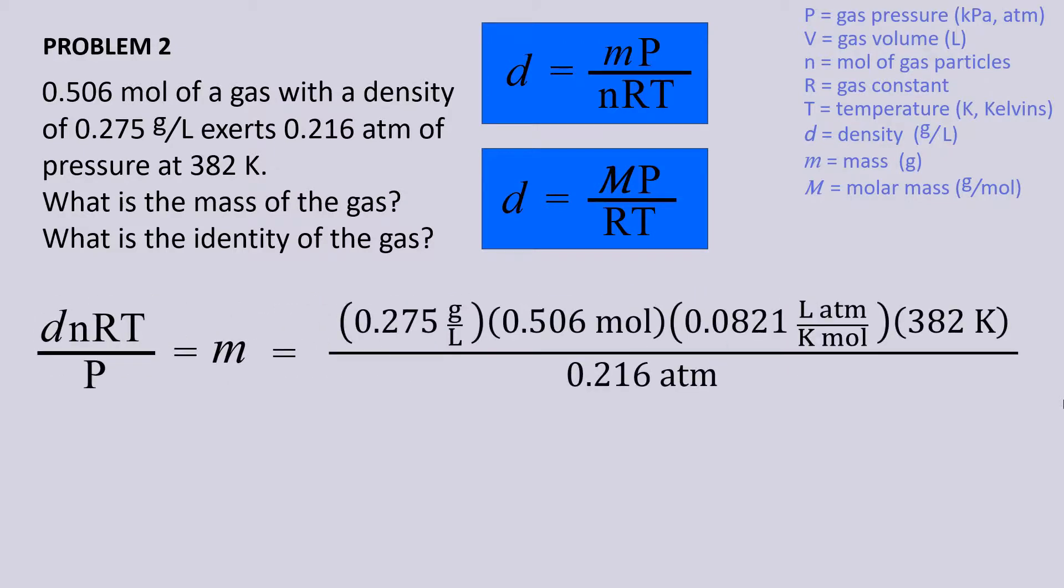Let's plug everything in, and this time we use R with atm since that is the unit used in the problem. Atmospheres, Kelvin, moles, and liters all cancel, leaving grams, the unit for mass. Plugging everything in gives a mass of 20.2 grams.